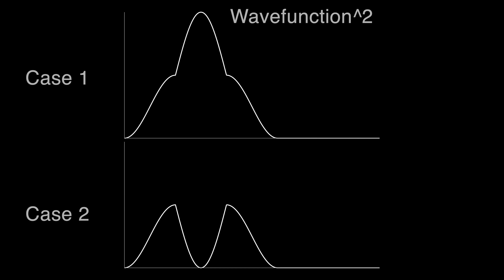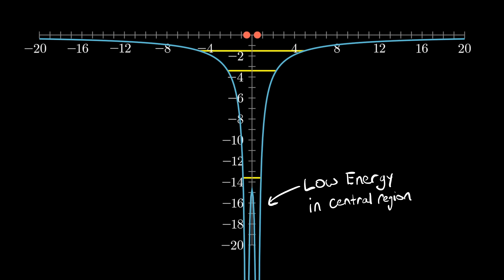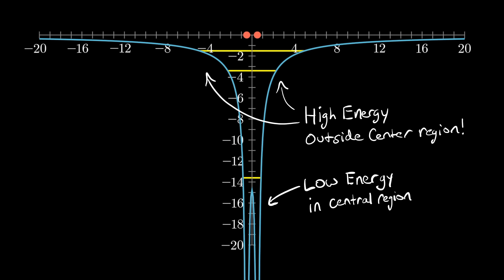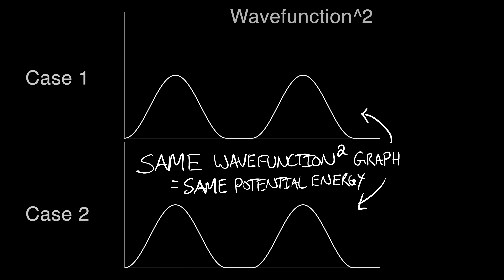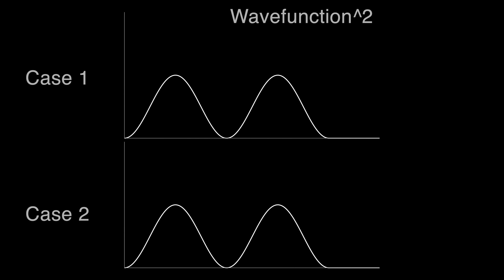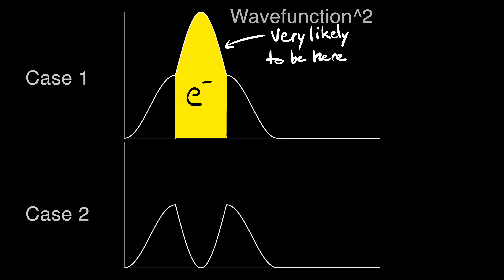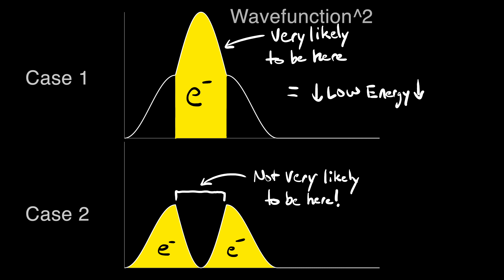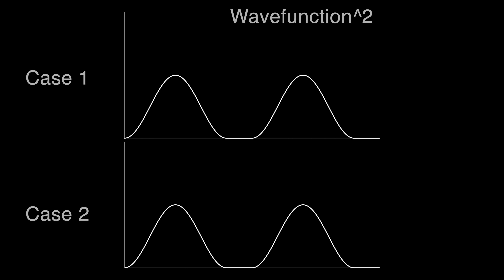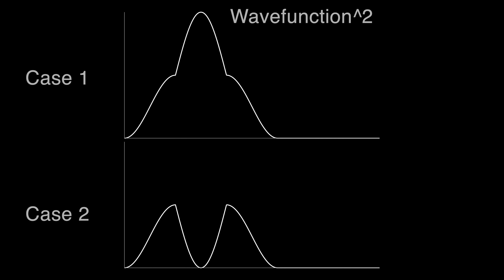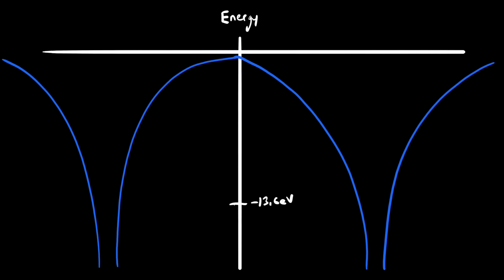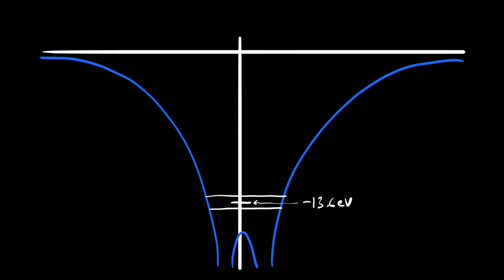What can we say about the potential energy in each case? After the electrons come together, there is a difference. In case one, the electron is very likely to be in the central location, so it has a lower energy level. In case two, the electron is more likely to be outside the central region, and thus the energy level is higher. The orbitals started out with the same energy level, but as they merged, they split into two different energy levels. We call the lower energy level the bonding orbital and the higher the antibonding orbital. Does this fix our problem? Before the merge we had two orbitals and a capacity of four electrons; after the merge we still have two orbitals and a total capacity of four electrons. We are no longer violating the Pauli exclusion principle.